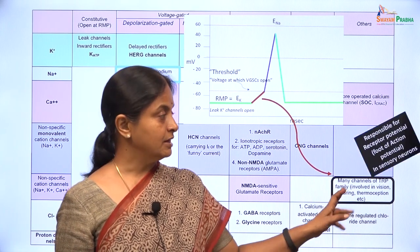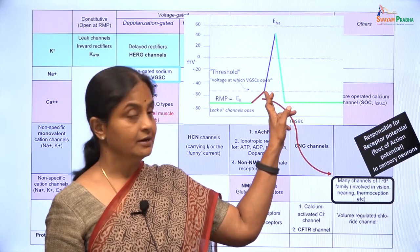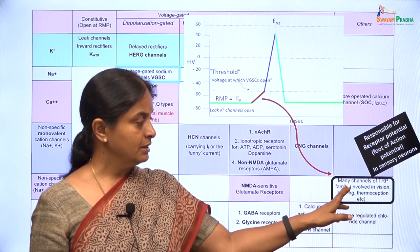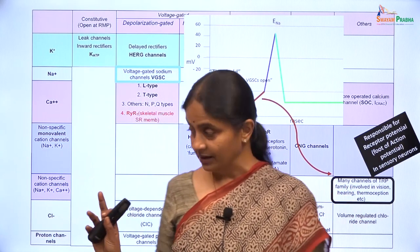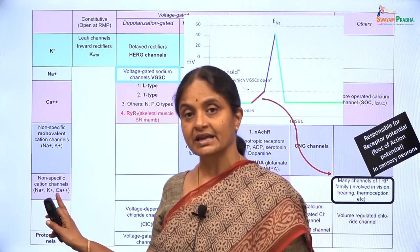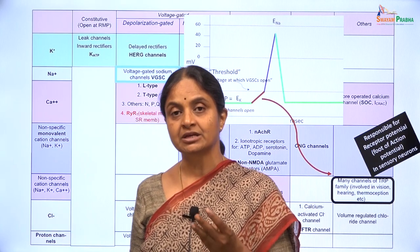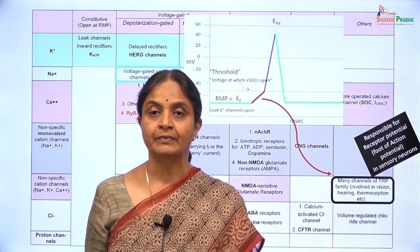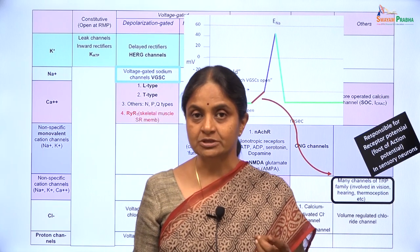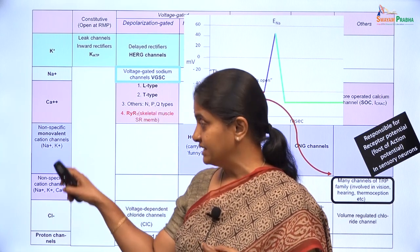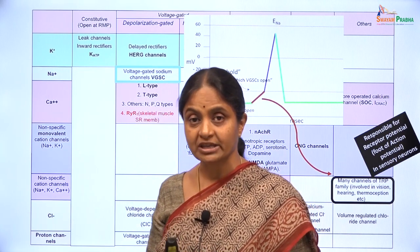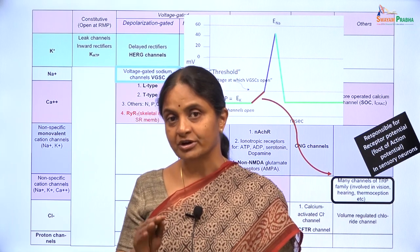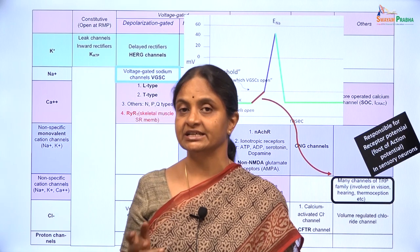The TRP channels are responsible for the early depolarization or the foot of the action potential in sensory neurons. As you see in this table, TRP channels are non-specific cation channels which means they permit all three cations to go past — sodium, potassium, and calcium. There are some textbooks which refer to these channels as sodium channels — that is technically incorrect. We will see that more in context when we discuss nicotinic acetylcholine receptors.